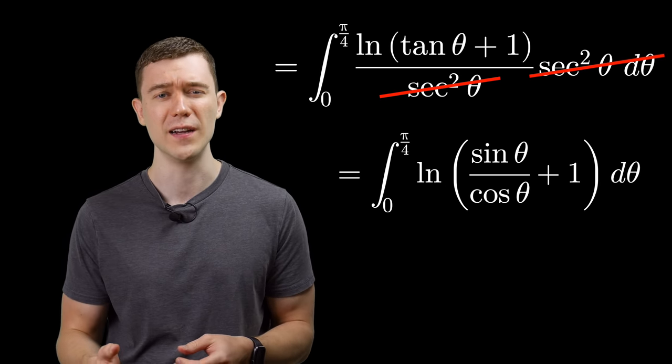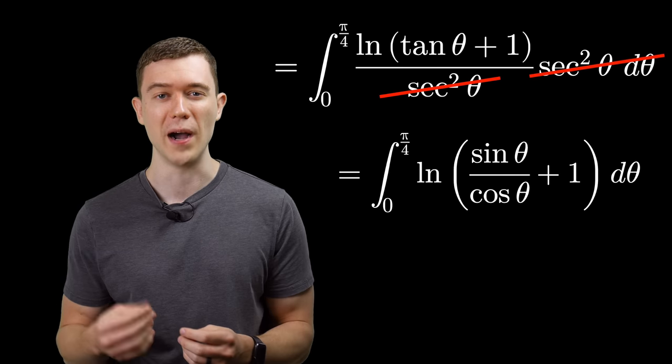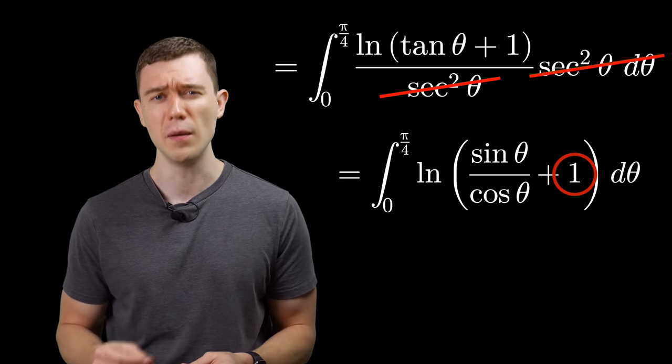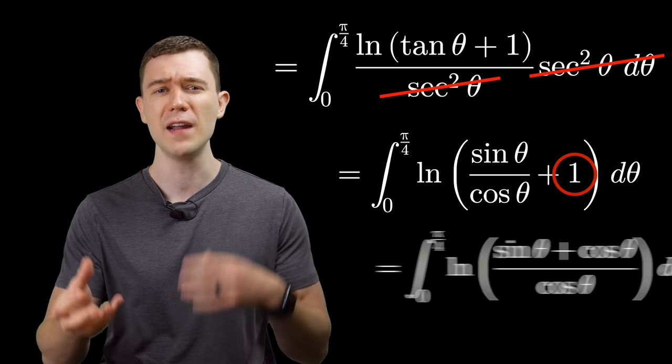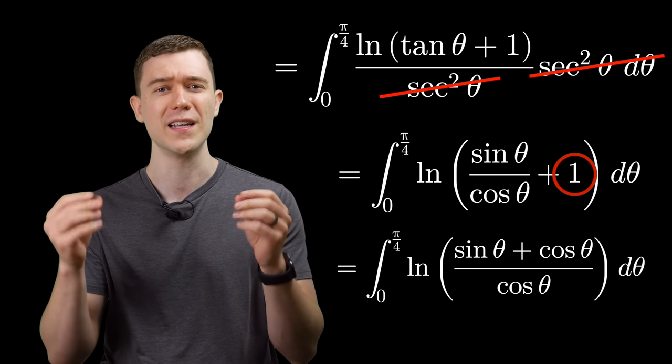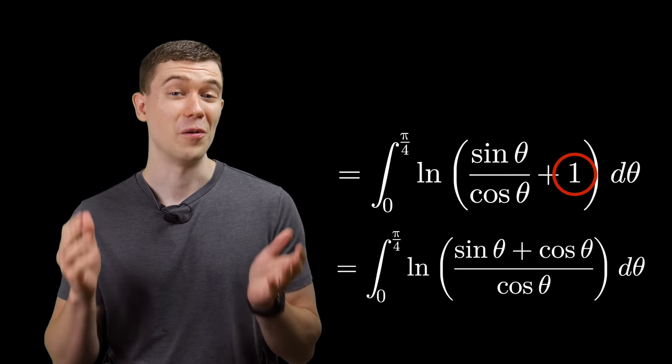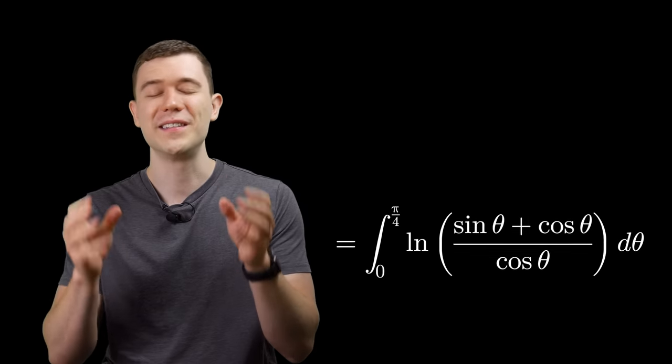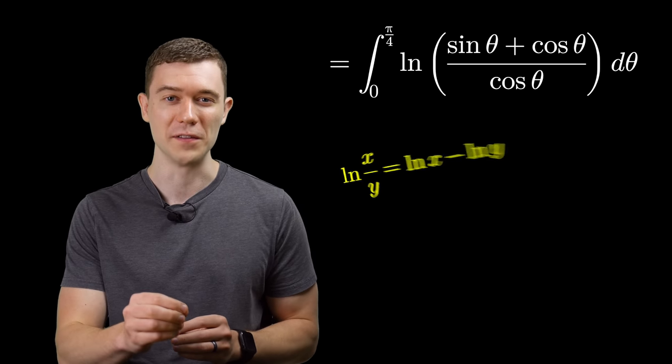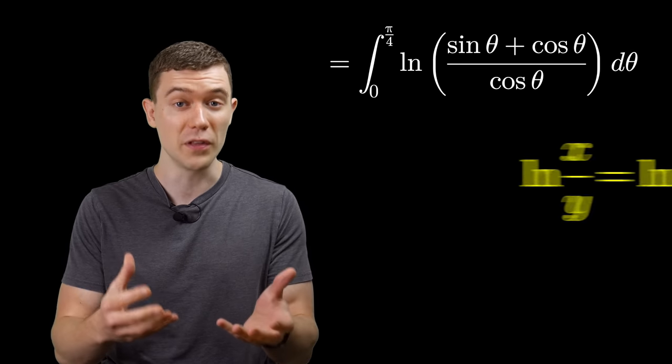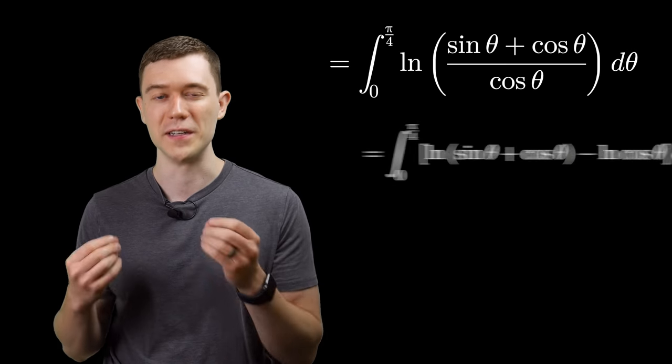Tangent is sine over cosine, and let's go ahead and combine with the plus one, get a common denominator. We'll have sine plus cosine over cosine inside that logarithm. When you have the log of a quotient, it's screaming to use properties of logarithms. So let's do the log of the numerator minus the log of the denominator.